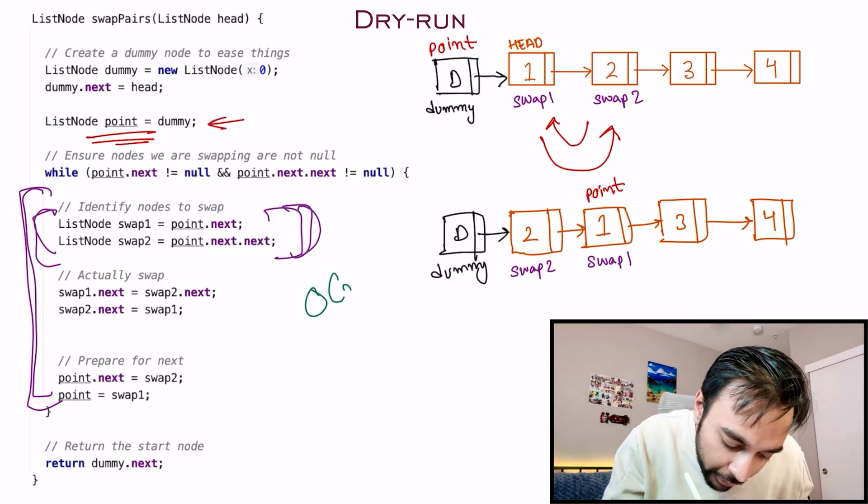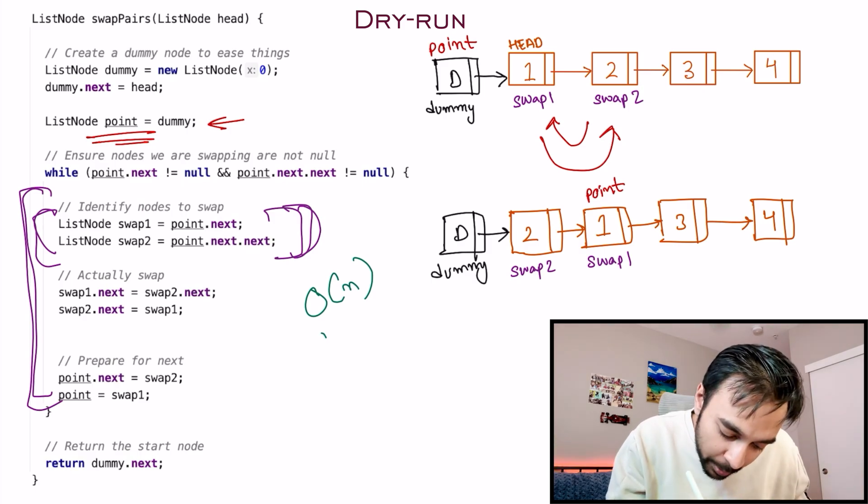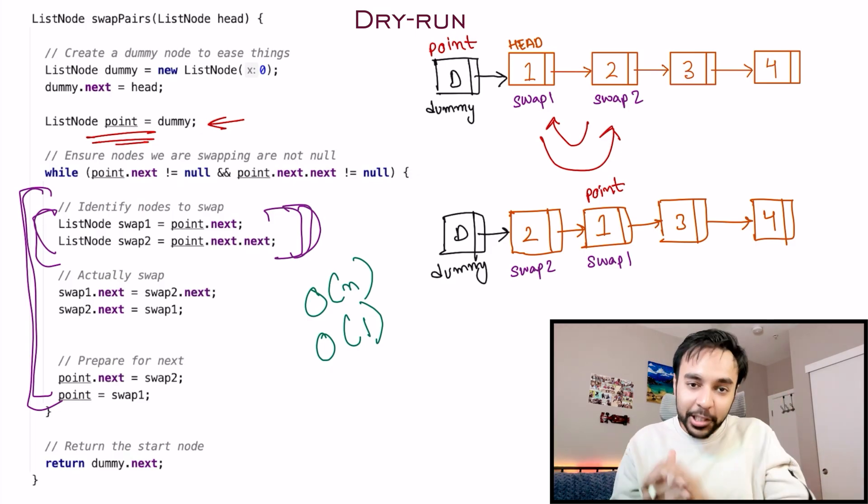The time complexity of this solution is O(n) because you iterate through the list only once. The space complexity is O(1) because no extra space is used. As a final thought, as you solve more linked list problems, you'll start identifying patterns. One such pattern is using a dummy node — it gives you a safe starting point when you're worried about losing the head during calculations. You attach it at the beginning, iterate freely, and remove it at the end.